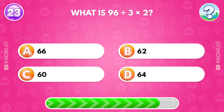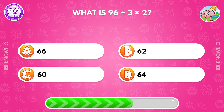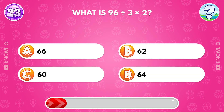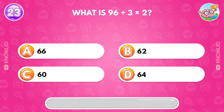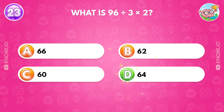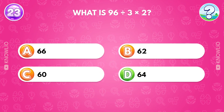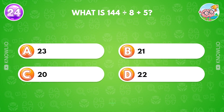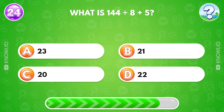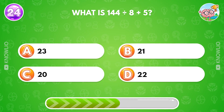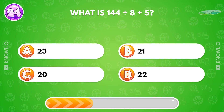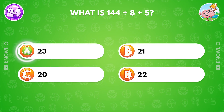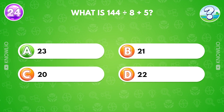What is 96 divided by 3 times 2? Answer D, 60. What is 144 divided by 8 plus 5? Answer A, 23.